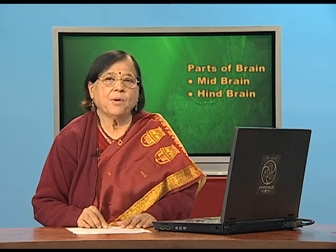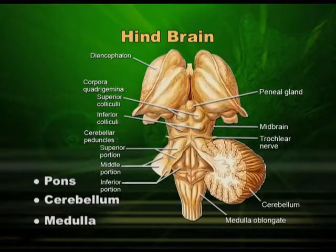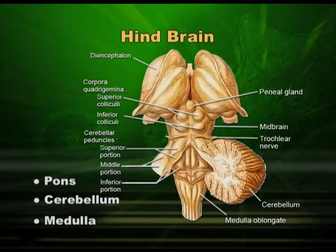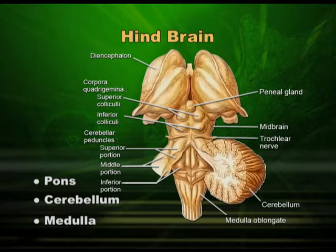There are three important parts in the hindbrain: the pons, the cerebellum, and the medulla. Please do not confuse cerebellum with the cerebrum of the forebrain. The cerebellum is seen on one side as an extension and has become large in size to accommodate a large number of neurons. In the diagram, this is the medulla part, this is the cerebellum, this is the pons, and you can also see the quadrigemina of the midbrain — four lobes.